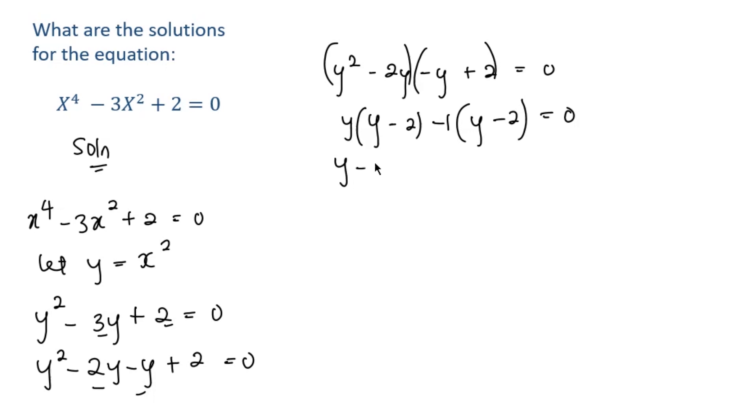We end up having y minus 1, which is the common factor here. So we factor that out and pick one of the brackets. So we have y minus 1 times y minus 2 equals 0.